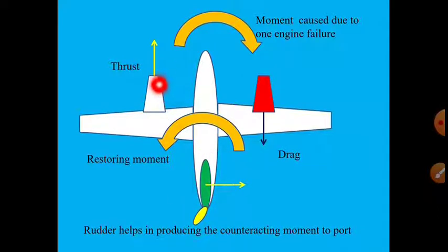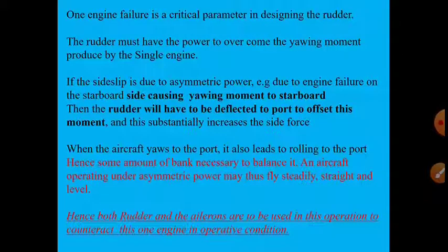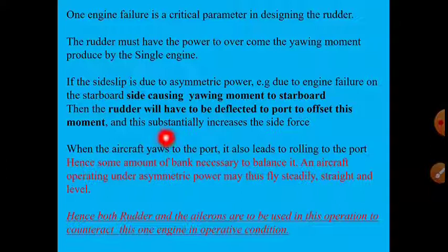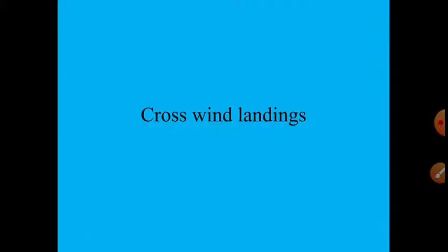The rudder has the advantage of being far from the CG, giving it a long moment arm. The vertical stabilizer is a large structure, and the rudder may occupy 50–60% of it — this sizing is driven by the engine-failure scenario. Additionally, in single-engine operation, yawing also causes rolling in the same direction, so ailerons must also be used to counteract this.